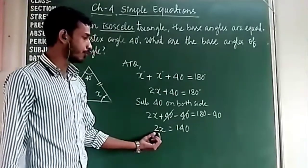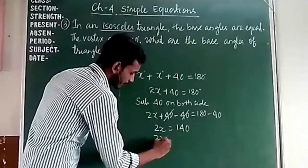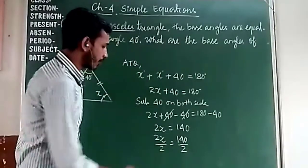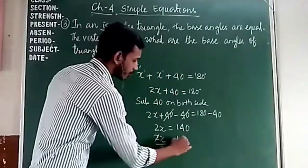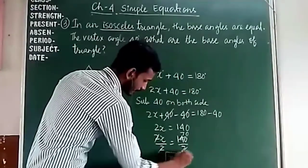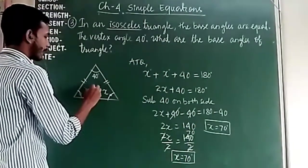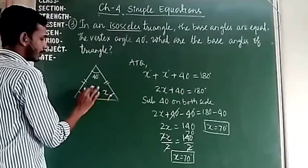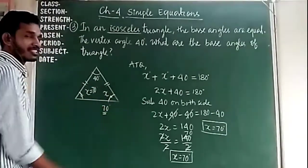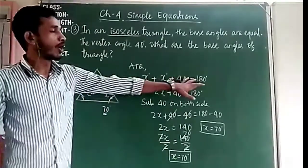Now we divide both sides by 2. 2x divided by 2 equals 140 divided by 2, giving x equals 70 degrees. So the base angles are each 70 degrees. Verification: 70 plus 70 plus 40 equals 180 degrees. Correct.